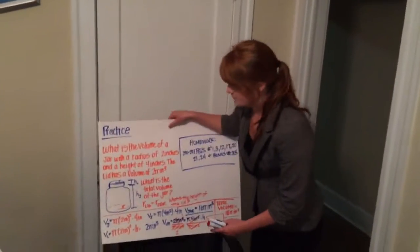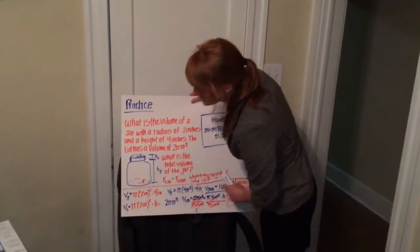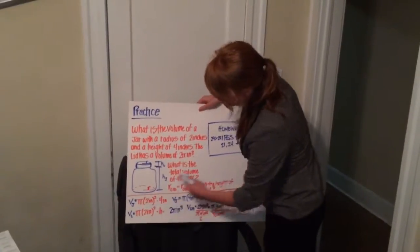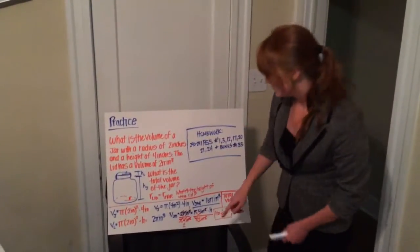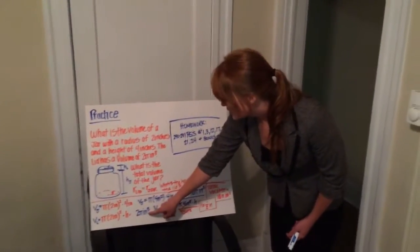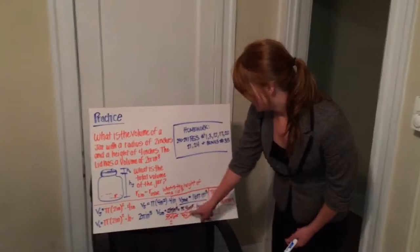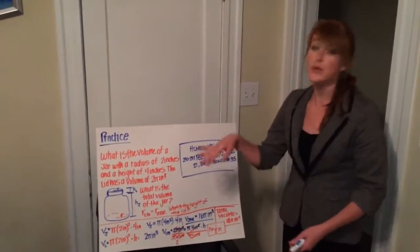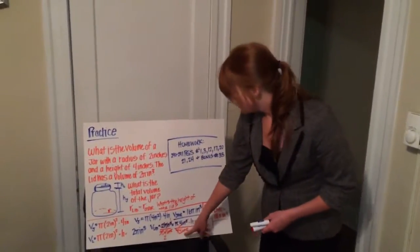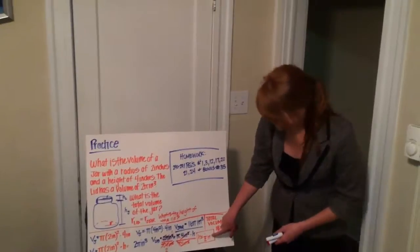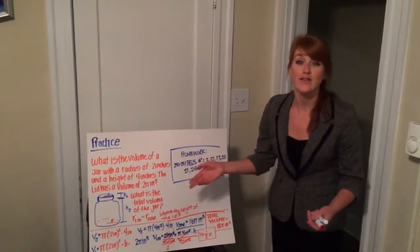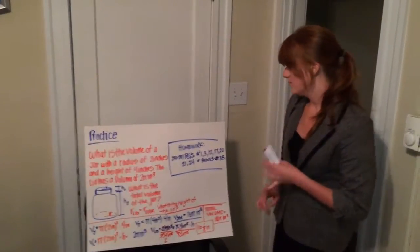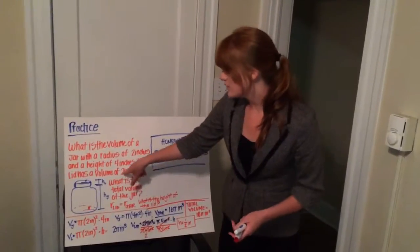We can write the formula as: volume of the lid equals pi times 2 inches squared times h, our variable. So 2 pi inches cubed equals pi times 4 inches squared times h. Now we divide both sides by pi times 4 inches squared, and that gives us h equals 1 inch — that's the height of the lid. And the total volume is given in the problem, so we can just add both volumes together.